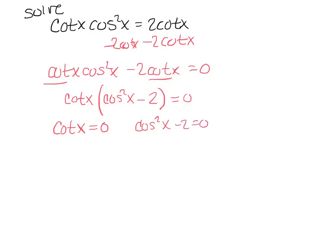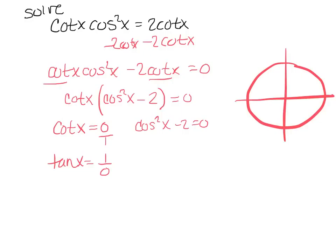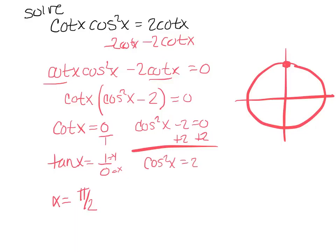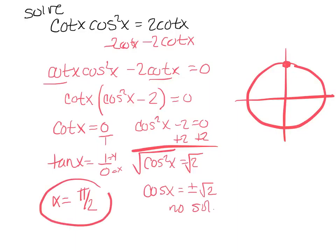I've got cotangent x equals 0, and cosine squared x minus 2 equals 0. Cotangent equals 0 means tangent is 1 over 0, so looking at the unit circle where y is 1 and x is 0, that gives 90 degrees or π over 2. For cosine squared x equals 2: taking the square root gives cosine x equals plus or minus root 2. But cosine can never be bigger than 1, and root 2 is bigger than 1, so this gives no solutions. The only answer is π over 2.